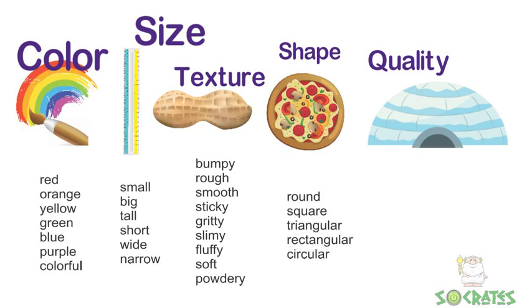The shape of an object could be round, square, triangular, rectangular, or circular. And the quality of an object could be cold, cozy, clean, bright, or safe.